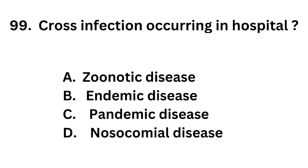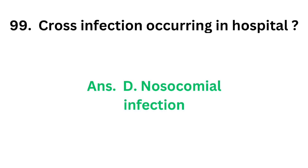Question number 99. Cross infection occurring in hospital: Option A: Zoonotic disease. Option B: Endemic disease. Option C: Pandemic disease. Option D: Nosocomial disease. The correct answer is Option D, Nosocomial infection. Cross infection occurring in hospital is called nosocomial infection.